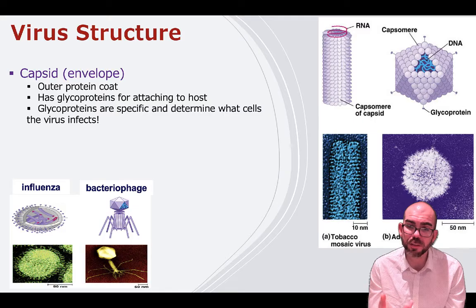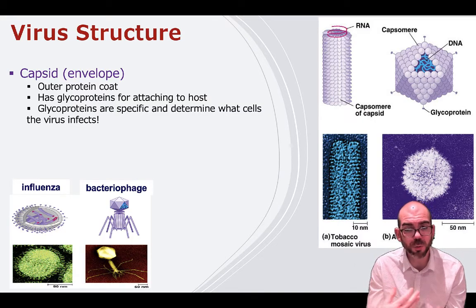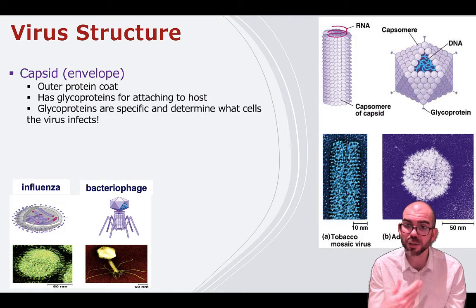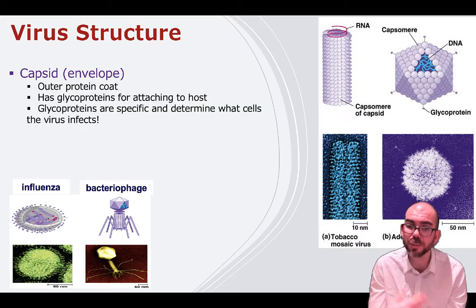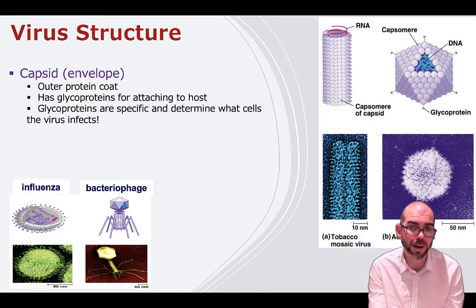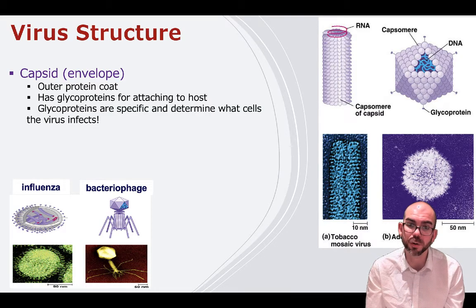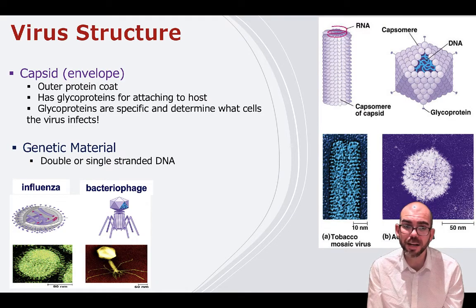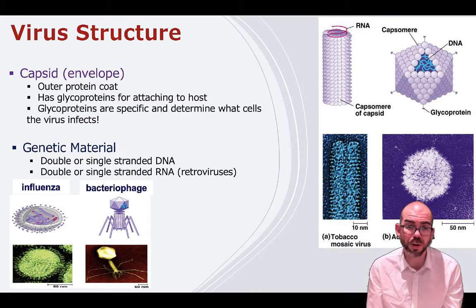This glycoprotein specificity determines how you react to viruses and what organisms they infect. Influenza's glycoproteins can attach to the lungs in mammals like humans but also other animals like dogs. Compare that to a bacteriophage — a completely different looking capsid — which will only infect bacteria and can't attach to any eukaryotic cells due to a glycoprotein mismatch. The genetic material inside a virus can be double or single-stranded DNA, or double or single-stranded RNA — and viruses with RNA genomes are called retroviruses.